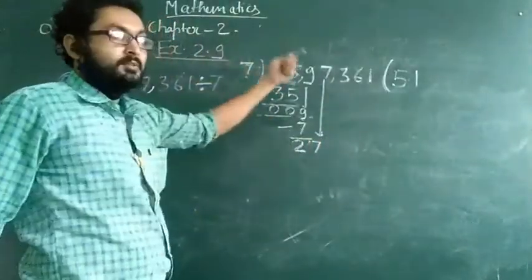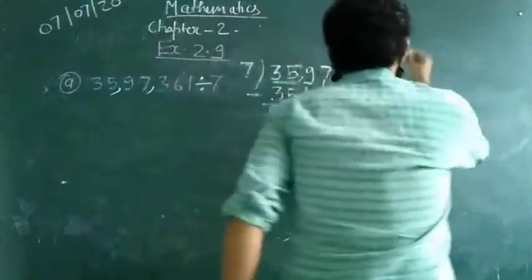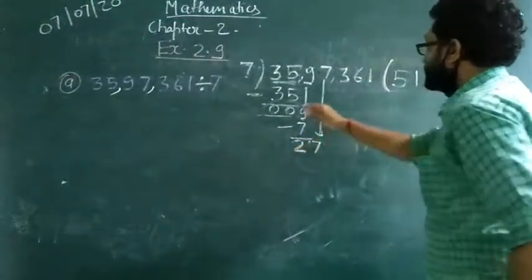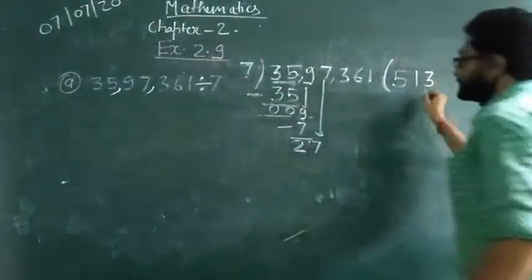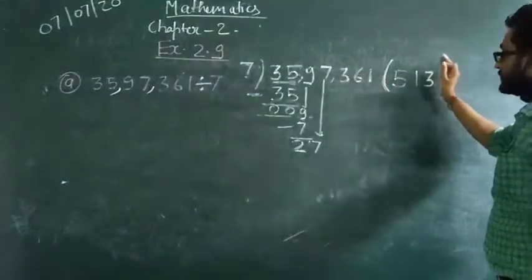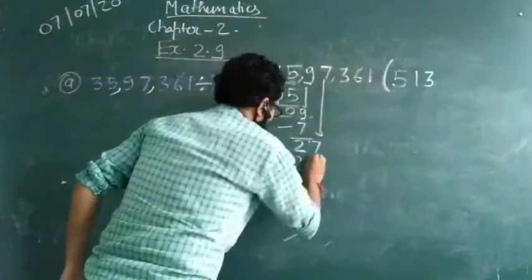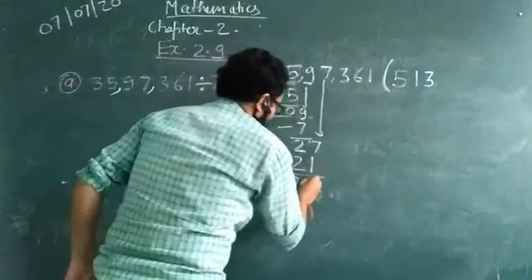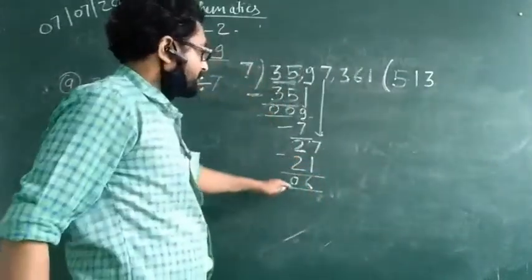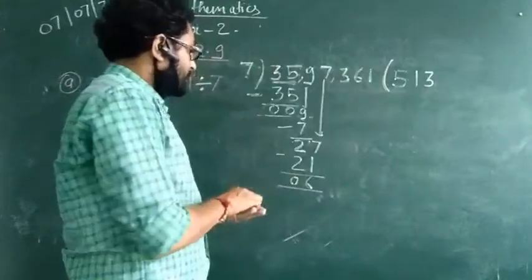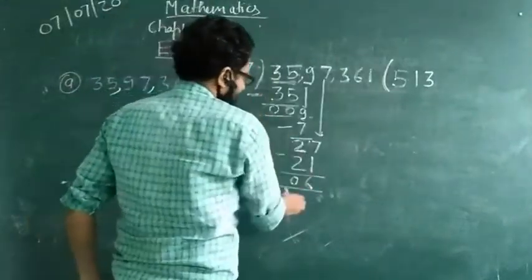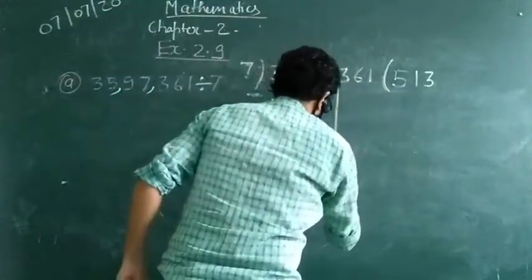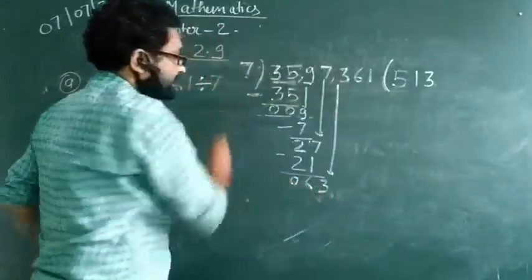We read the table: 7, 14, 21, 28 — 28 is greater than 27. So we take 3 times only: 7, 14, 21. Now we subtract: 27 minus 21 gives remainder 6. Now 6 is smaller than 7, so 6 becomes the dividend. But it is smaller than 7, so we take the next digit also. Now 63 is greater than 7. 7 nines are 63. So the quotient digit is 9 and remainder is 0.